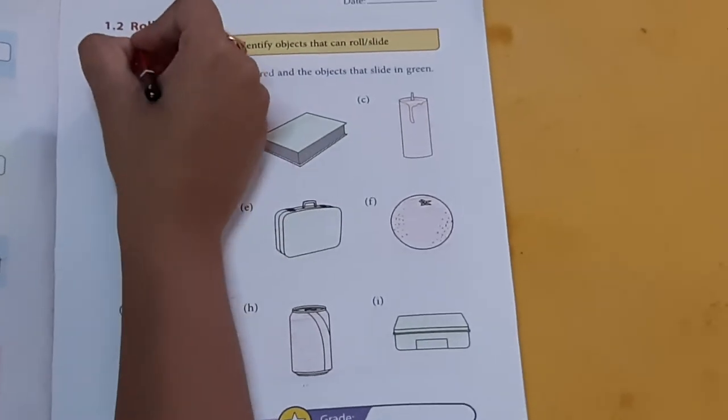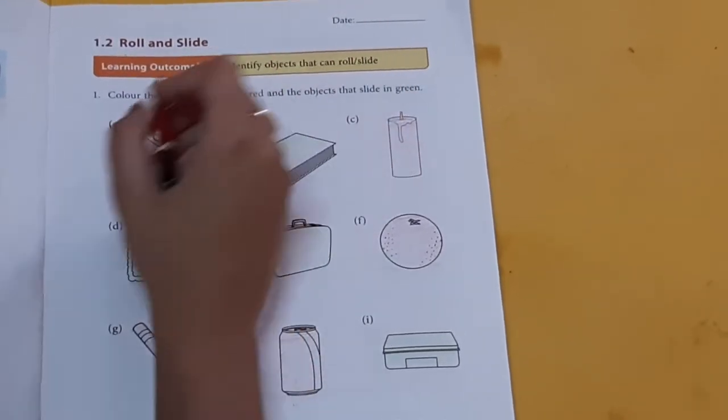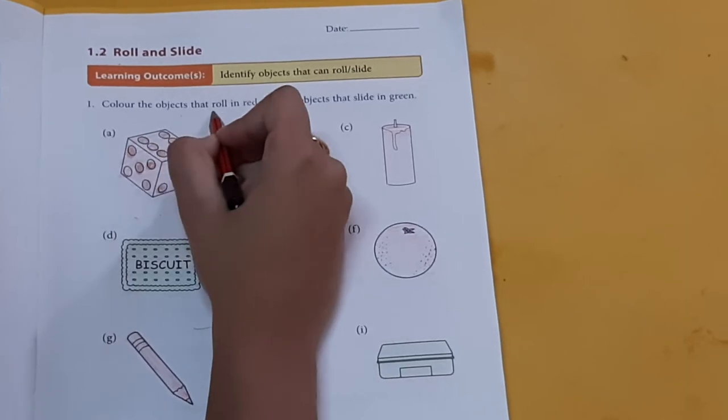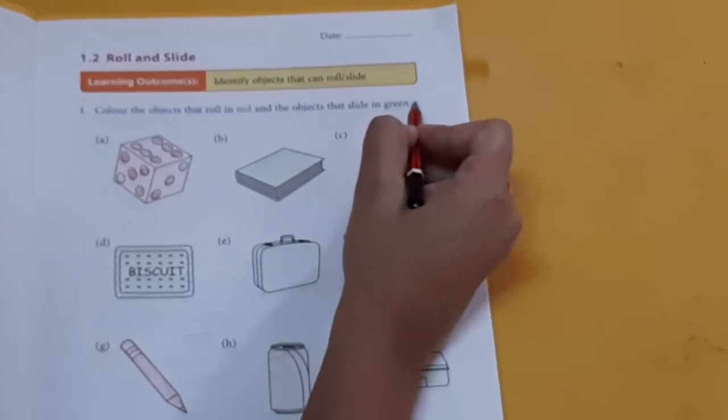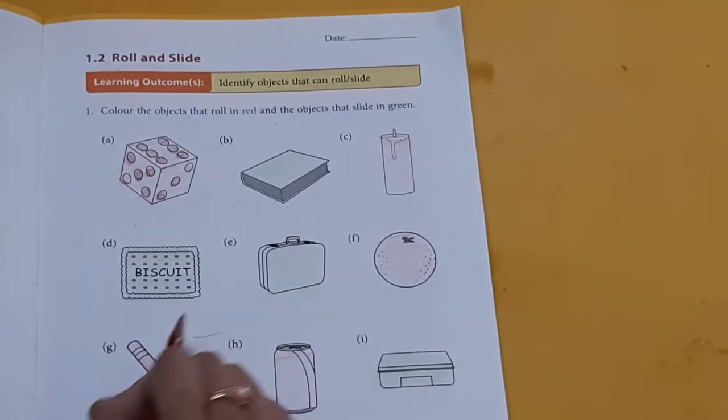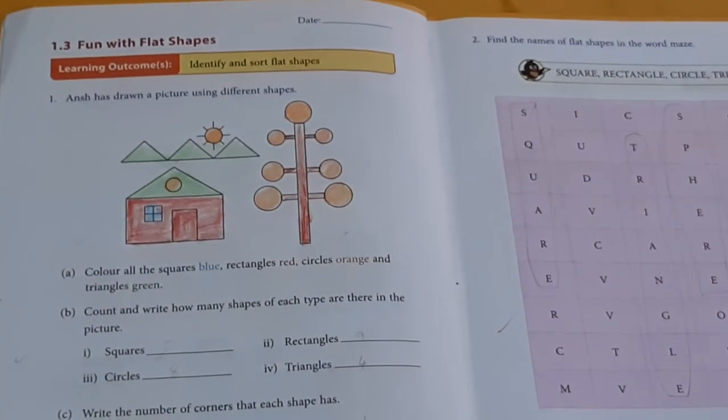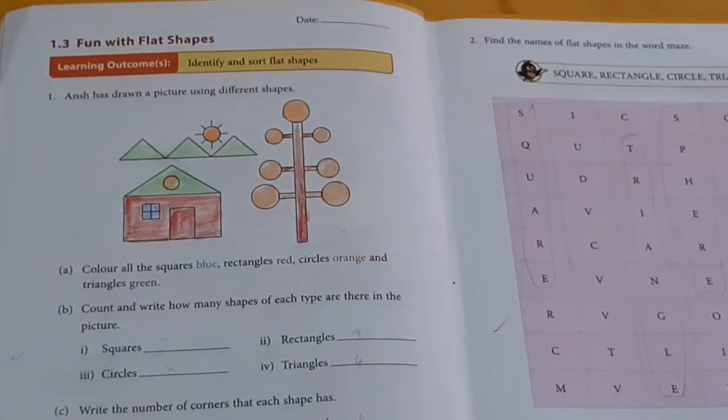One point two. Roll and slide. Color the object that roll in red and the objects that slide in green. I have already done it for you.